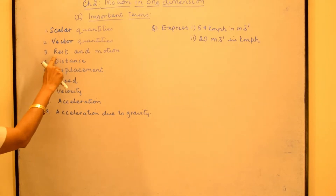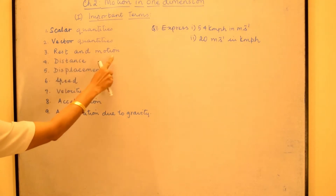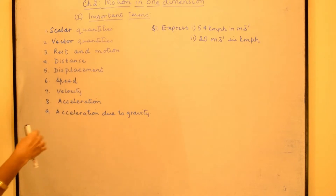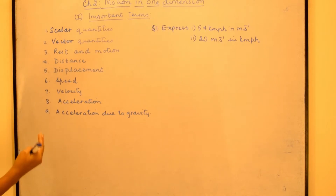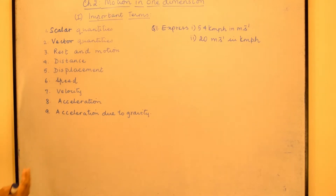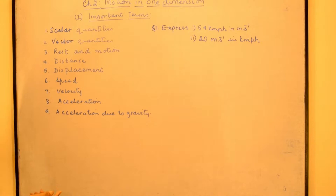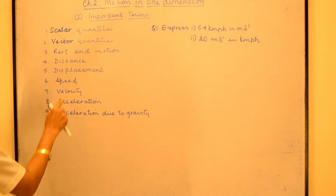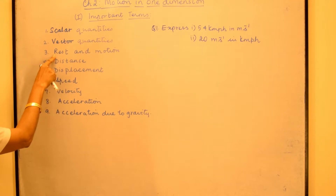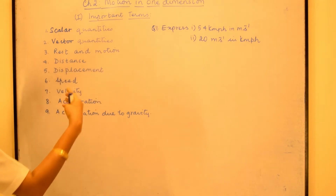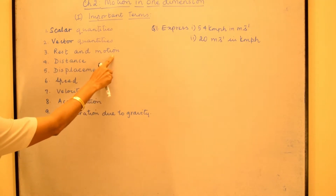Then we come to the third topic: rest and motion. Rest and motion are two terms which are actually in comparison to the surroundings. For example, if we as a group are going in a vehicle, then we are at rest with respect to each other. But a bystander on the road will see us in motion because our vehicle is moving. So rest and motion is relative. With respect to the surroundings, when the body is not moving it is in a position of rest, but if it is moving with respect to the surroundings, then we say that it is in motion.